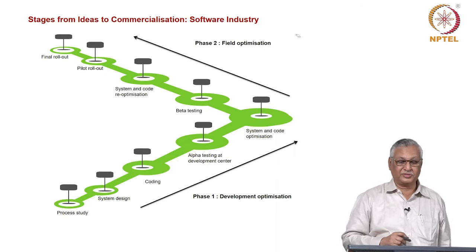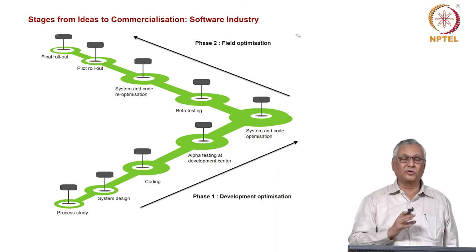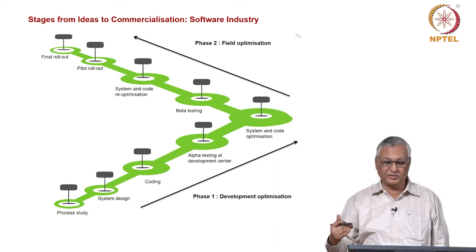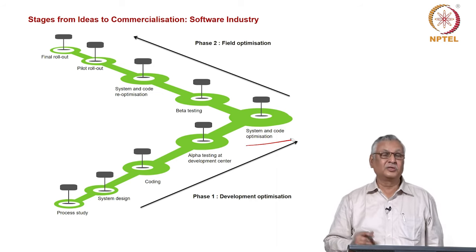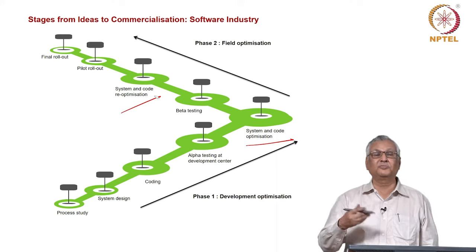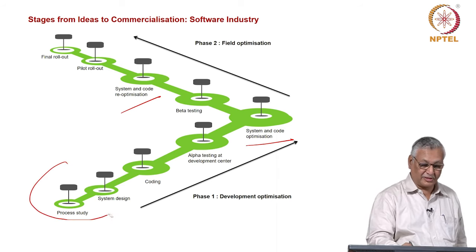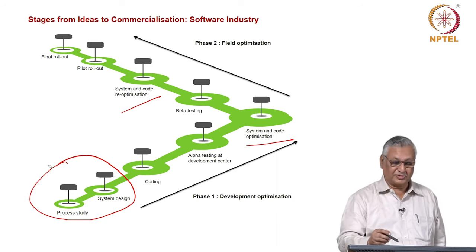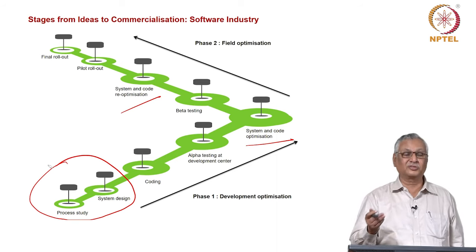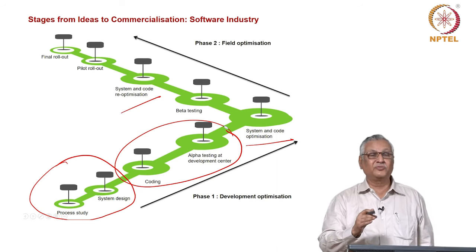Now let us look at the software industry. There are two phases: development optimization and field optimization. In development optimization, you look at overall business processes, develop system architecture, get into coding, and do alpha testing at the development center, leading to system and code optimization. Then in field optimization, you give it to users for beta testing, receive feedback, do system and code re-optimization, and pilot follow-up. What is evident: there is an early ideation phase involving process study and system design, then a prototyping phase. The product may be physical like an automobile or drug, or service-oriented like software — but there is always an ideation phase and a prototyping phase, with the prototyping phase going through successive iterations.